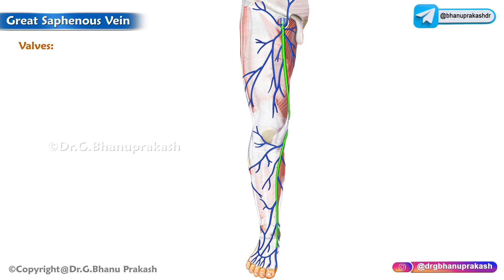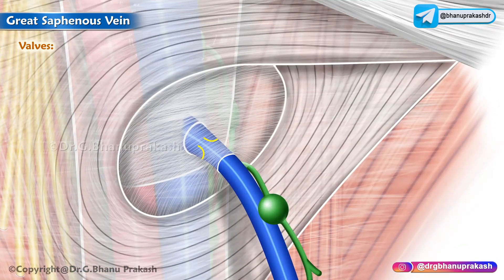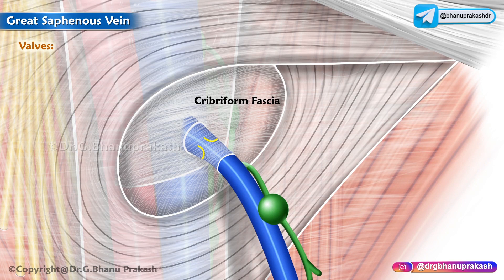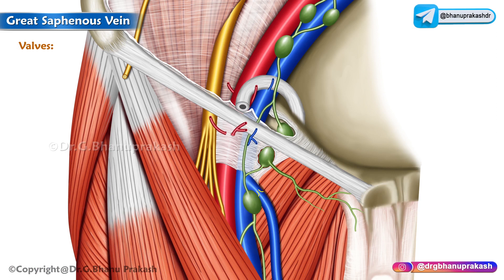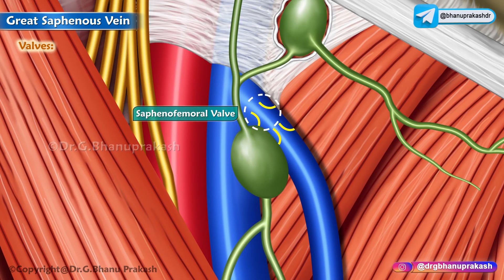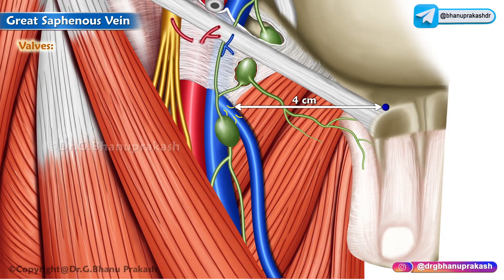Next are the valves. In the great saphenous vein there are approximately 10 to 20 valves, of which only the important ones responsible for preventing backward flow of blood will be discussed. One lies just before the vein pierces the cribriform fascia, that is just before its termination into the femoral vein. The other lies at the junction with the femoral vein — the saphenofemoral valve.